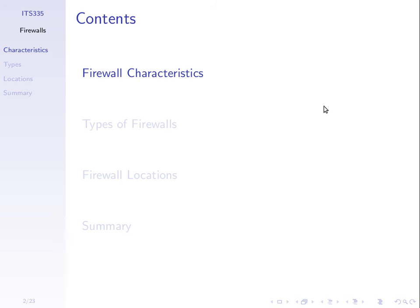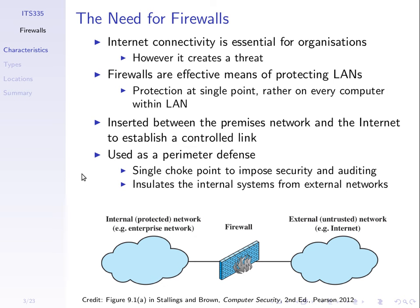What are some characteristics of a firewall? With most organisations, the internet is a key resource — most organisations need network access to achieve their goals. But having internet connectivity creates a threat because malicious users outside may try to access our resources, attempt denial of service attacks, or install viruses. A firewall can be a useful means for protecting a local area network or internal network — with the internal network on one side and the rest of the world on the other.